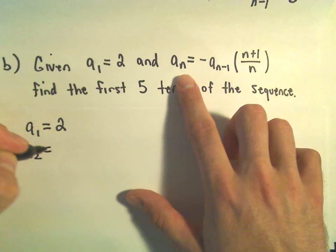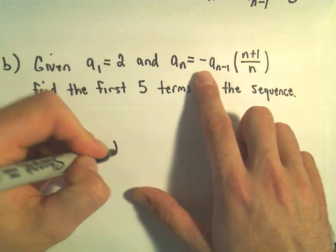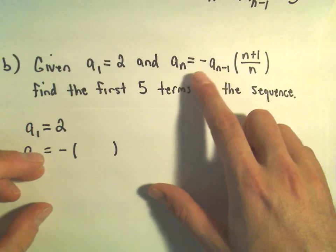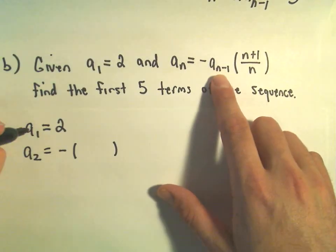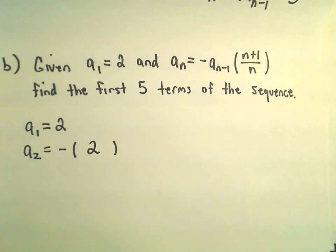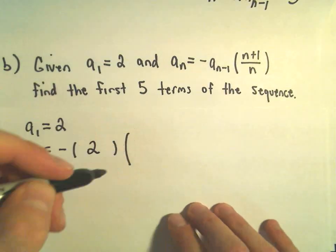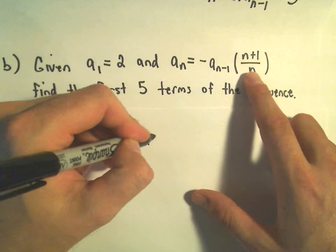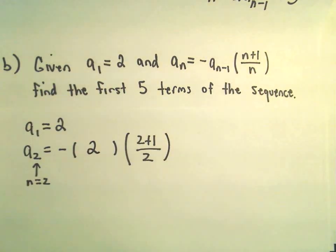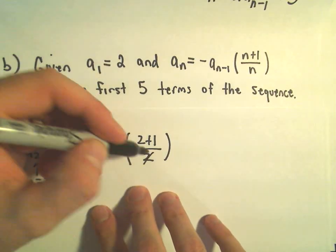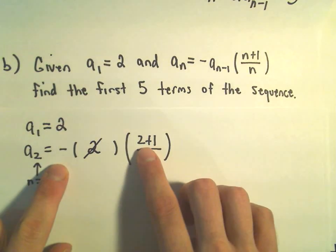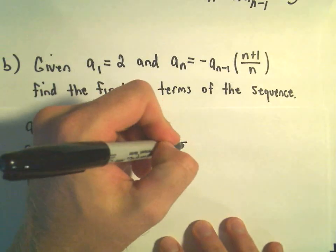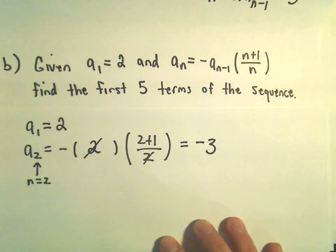To figure out a sub 2, the formula says we take the negative of our a sub 1 value. Plugging in n equals 2, we get 2 minus 1, so a sub 1, which is just plain 2, multiplied by n plus 1 over n — so 2 plus 1 over 2. The 2s cancel out and we're left with 3 in the numerator, but we have this negative floating around. So it looks like we're just going to be left with negative 3.